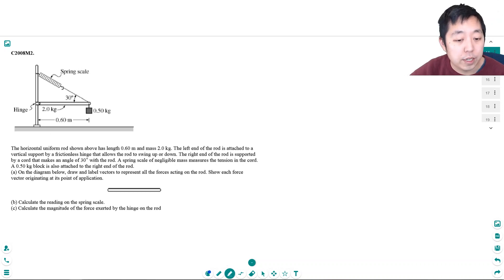So let's see what we've got here. A horizontally uniform rod shown above has a length of 0.6 meters and a mass of 2 kilograms. The left end of the rod is attached to a vertical support by a frictionless hinge that allows the rod to swing up or down. The right end of the rod is supported by a cord that makes an angle of 30 degrees with the rod.